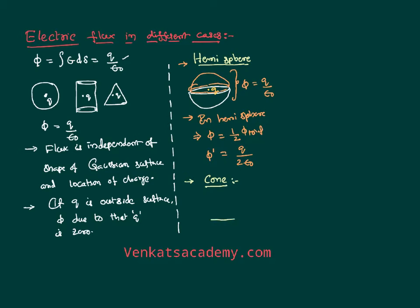Now let us imagine we have a cone. On the circular face of the cone there is a charge Q, and you are asked to calculate the flux. Again, this is an open surface, so I cannot apply Gauss's law directly. I will imagine an identical cone on top so that the charge is completely inside a closed surface. For the entire system, flux equals Q by epsilon. For the lower cone — which is what we actually have in our problem — the flux is equally distributed, so the flux is half of the total: Q by 2 epsilon.